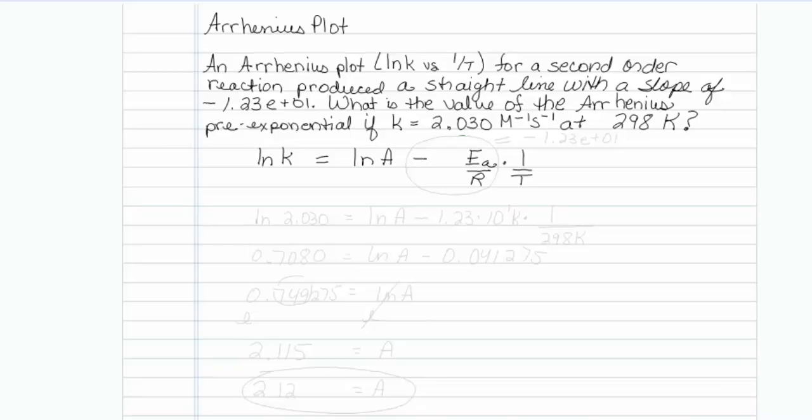for a second order reaction produced a straight line with a slope of minus 1.23 times 10 to the first power. What is the value of the Arrhenius pre-exponential if k equals 2.030 molar per second at 298 K?